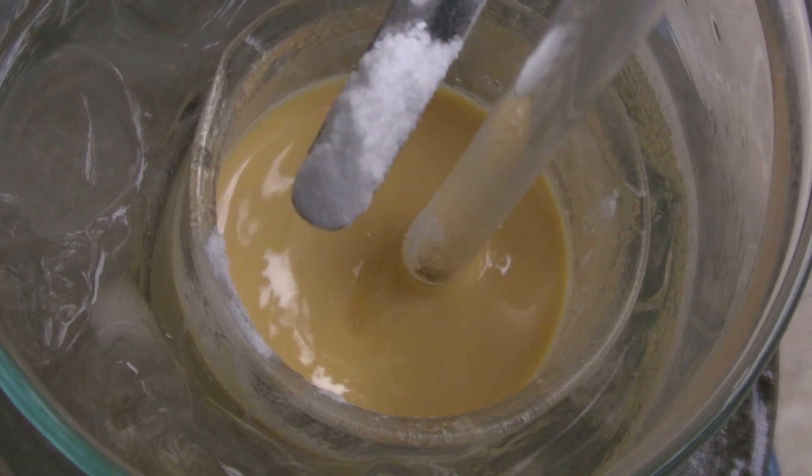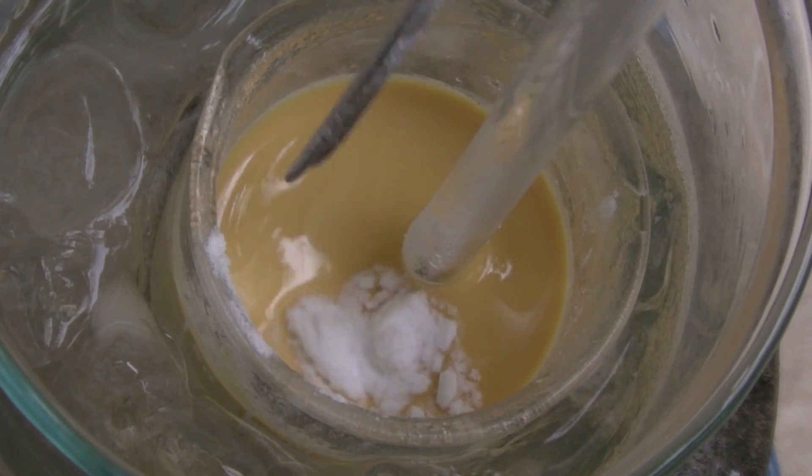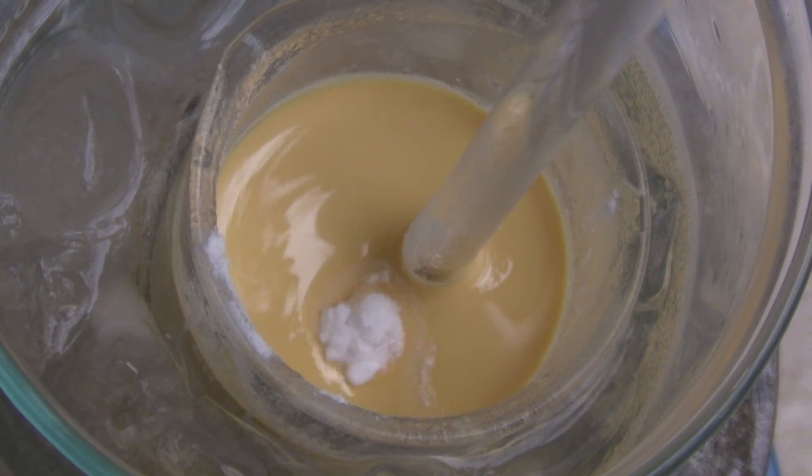In the end, the mixture became highly viscous, so the salicylic acid couldn't be mixed in so well. Turning the stirring plate off and on could solve this problem.